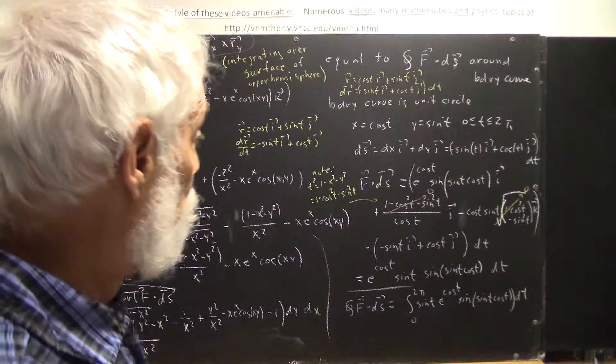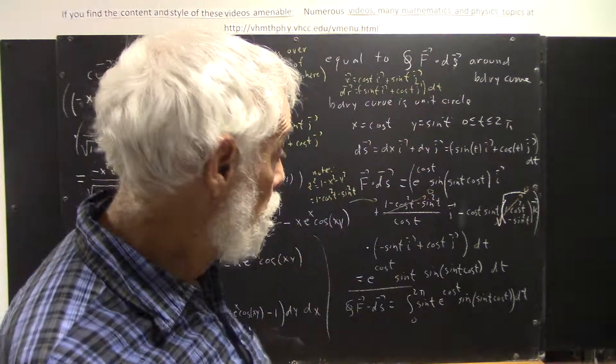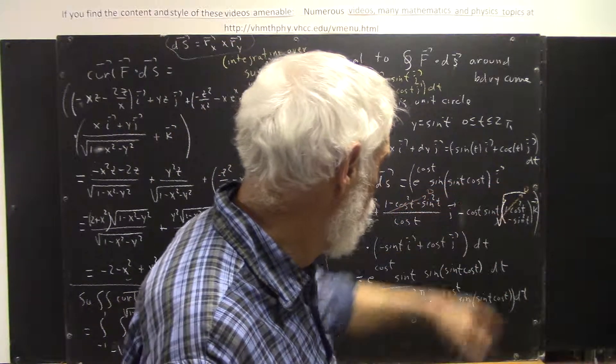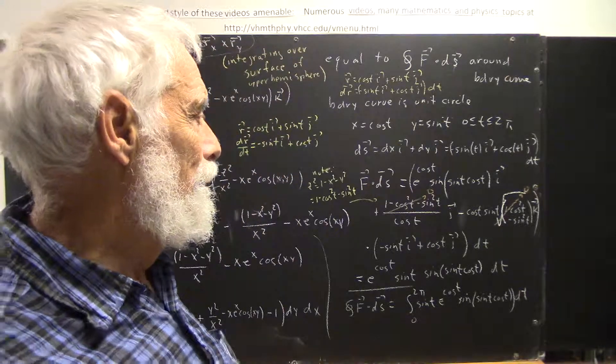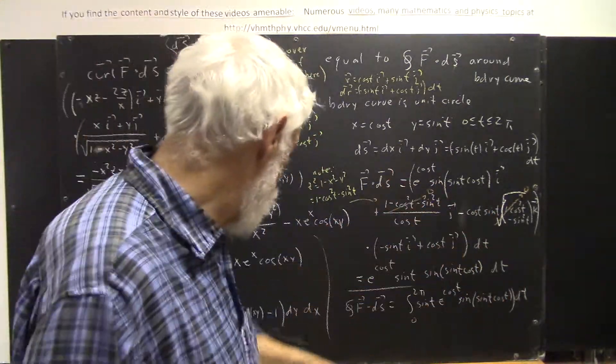We do the dot product. Now, f, our original function, which I've kind of lost here, but you should have that in your notes, it's e to the x sine of xy times i. Well, x is cosine t, so the e to the x is e to the cosine t.